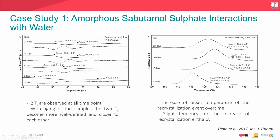Right after production we observe a single Tg at lower temperature, and after seven days we actually see this Tg becoming two Tgs. This behavior of salbutamol sulfate is well known and described in literature, so we were not surprised. What we see is that with aging of the samples, the two Tgs become more well-defined and closer to each other. Another phenomenon observed over time was an increase of the onset temperature for the recrystallization event during DSC analysis — indicating different crystallization kinetics related to water distribution within the particle.